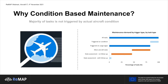That would save us ground time and cost. We're also after those tasks already triggered on condition — that 20 percent — because with CBM and better prognostics, we can prolong the planning horizon of those tasks and schedule them in a more convenient maintenance opportunity, thereby reducing the probability of a disruption. That is why condition-based maintenance is important in optimizing maintenance and increasing the earning potential of the fleet.